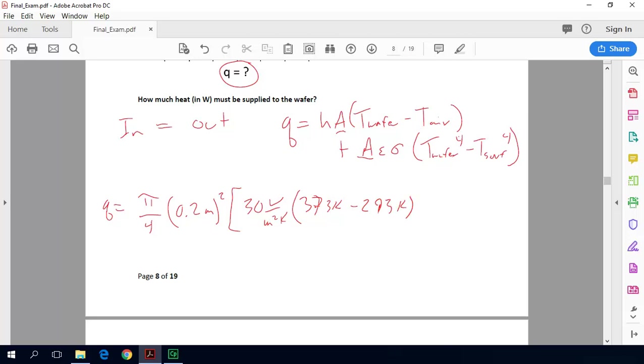Then we have the radiation part, so plus 5.67 times 10 to the minus 8, that's the Stefan Boltzmann constant, watts per meter squared per Kelvin to the fourth. Then I've got our emissivity, 0.85, and then we have our temperatures here, so that's 373 Kelvin to the fourth power, minus the surface temperatures are 288 Kelvin, and that's to the fourth power.